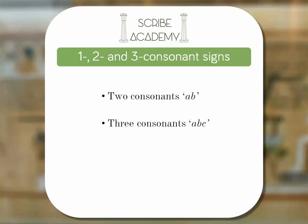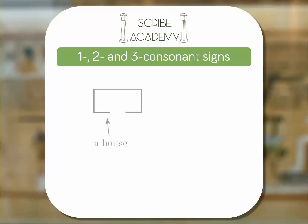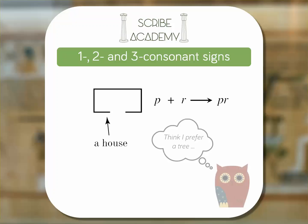As mentioned previously, the Egyptians didn't write vowels — all hieroglyphs represent consonants. For example, the hieroglyph for 'house' represented the sounds P and R, making 'per' — two consonants. Therefore, the house glyph is a two-consonant sign.